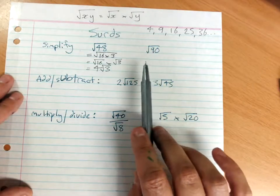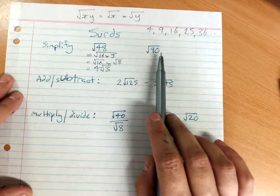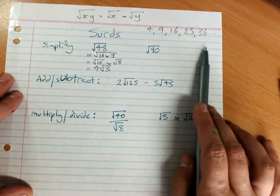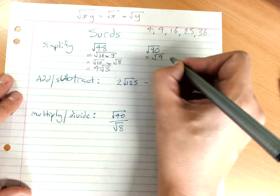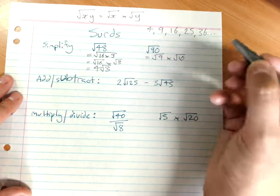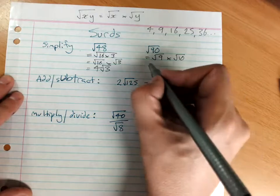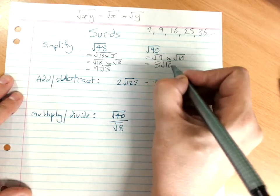So for the square root of 90, we look at our square numbers. You can see that that's the square root of 9 times the square root of 10. The square root of 9 is 3, so I've got 3 root 10.